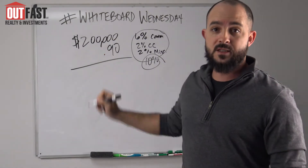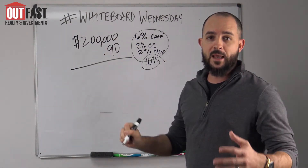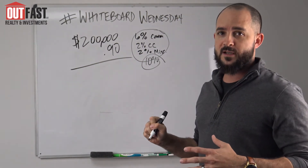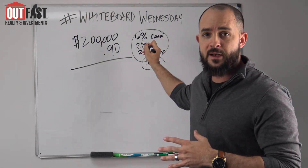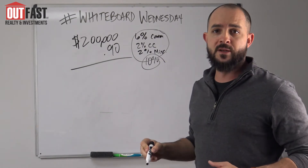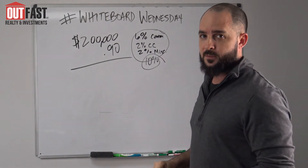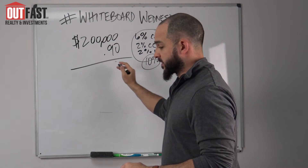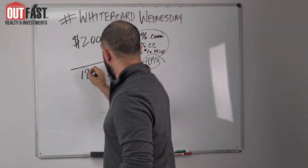Now, if you work with us at Outfast Realty and Investments, we can save you some money here if you're a fix and flipper yourself, because we discount our commissions when deals are sourced through us — all the way down to 1.5% on the listing side. But let's run through the numbers.